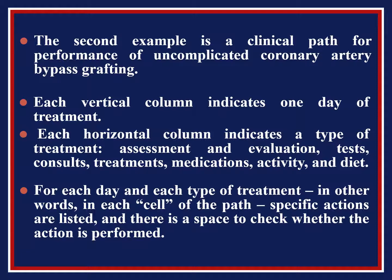In the coronary artery bypass grafting pathway, each horizontal column indicates a type of treatment — assessment and evaluation, tests, consults, treatments, medications, activities, and diet — for each day. In each cell of the path, specific actions are listed, and there is a space to check whether the action is performed or not.